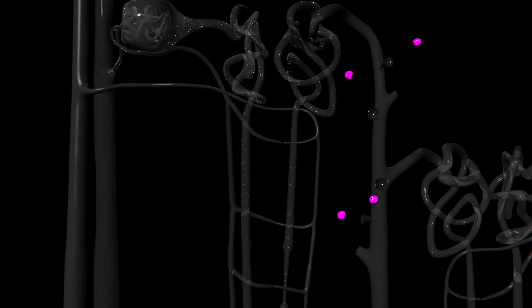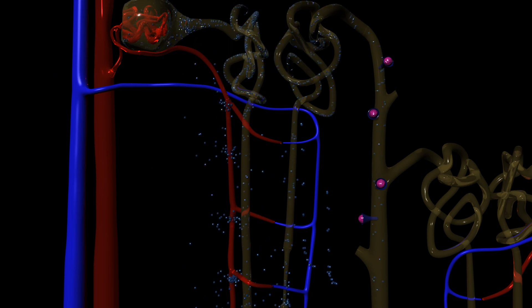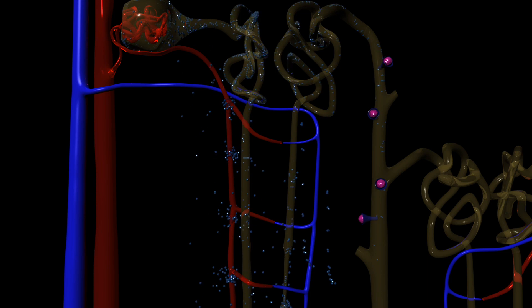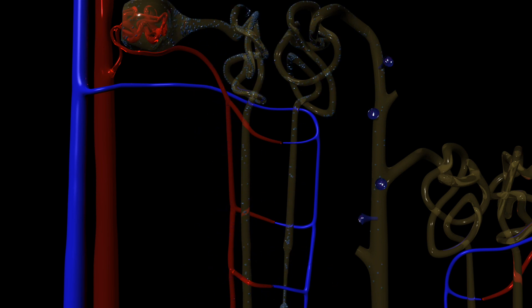This is vasopressin. This is the vasopressin receptor. When vasopressin binds to the vasopressin receptor, it increases the ability of water to pass through the collecting duct membrane. This allows water to be reabsorbed back into the bloodstream.